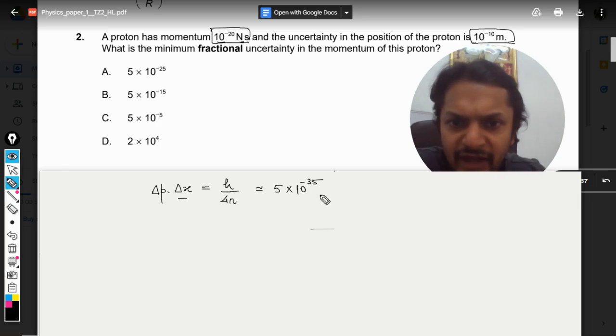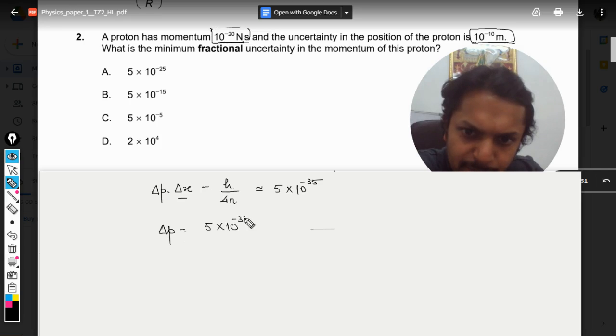And from here we are going to find ΔP. So ΔX is 10^-10 so it will be 10^-25.